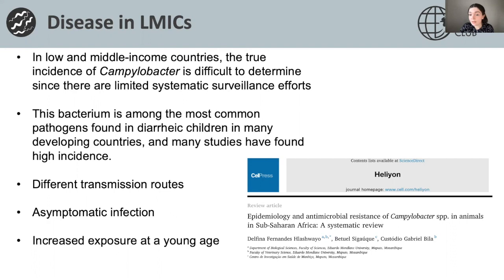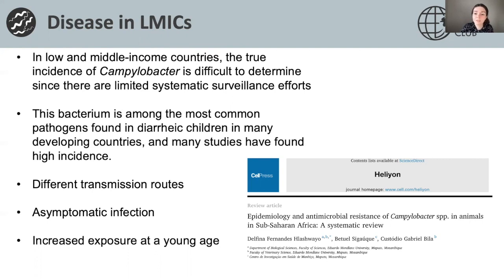Cattle and chickens appear to be important hosts playing an important role in transmitting to humans, but there are also many understudied animals. It's clear from the study that more data on Campylobacter epidemiology and antibiotic resistance is needed, and it is lacking in most sub-Saharan African countries. Obtaining detailed data on these subjects would allow the development of control strategies to tackle Campylobacter infections in animals and humans, and in turn reinforce antibiotic resistance control plans in those countries.